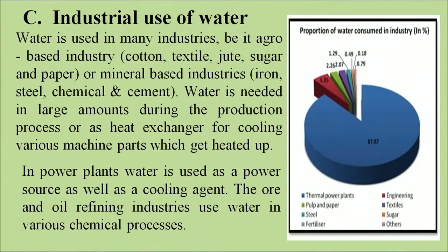Next is industrial use of water. The picture on the screen shows the split-up of total water between different aspects of commercial use. Water is used in many industries, be it agro-based or mineral-based industries. Water is needed in large amounts during the production process or as a heat exchanger for cooling various machines and instruments. In power plants, water is used as a power source as well as a cooling agent. The coal and oil refinery industries use water in various chemical processes.